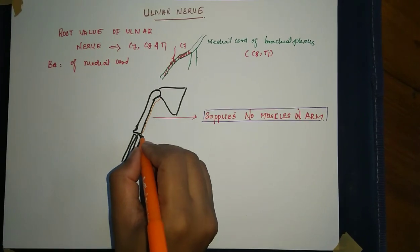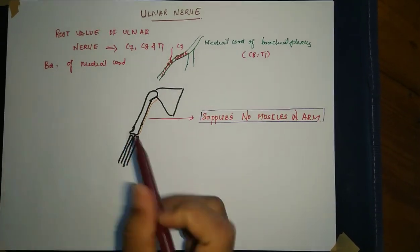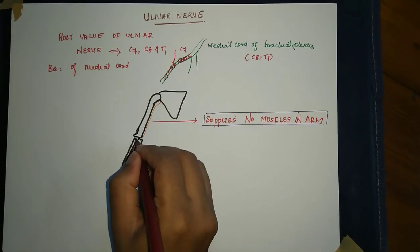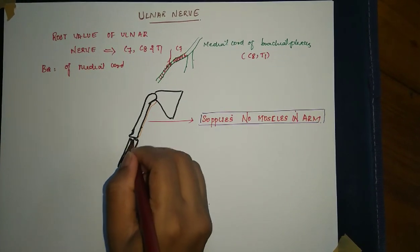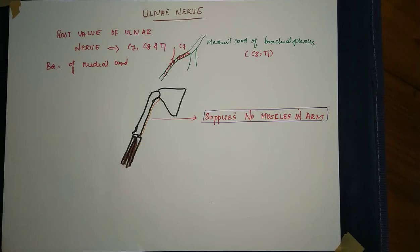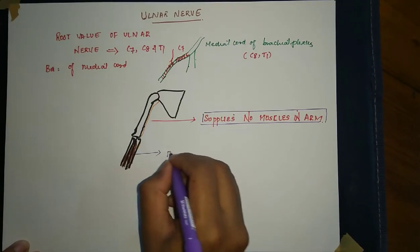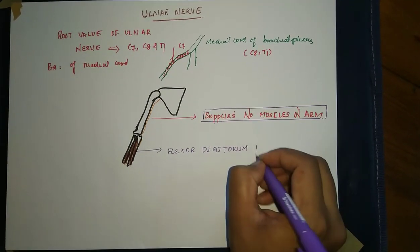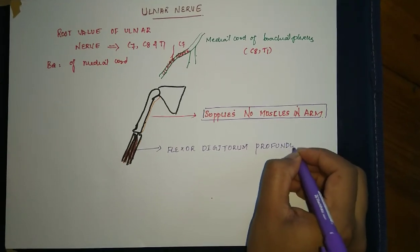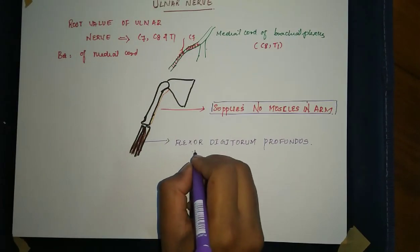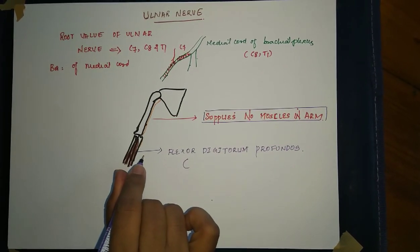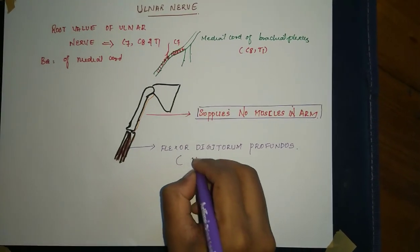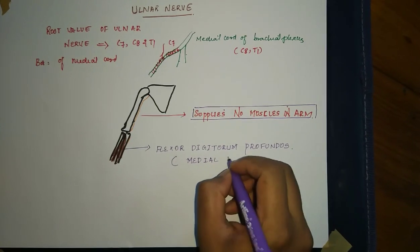After reaching the forearm, it supplies mainly two muscles. First, there is a large deep muscle which supplies the fingers — the flexor digitorum profundus. It should be noted that only the medial half of this muscle is supplied by the ulnar nerve; the lateral half is supplied by the median nerve.